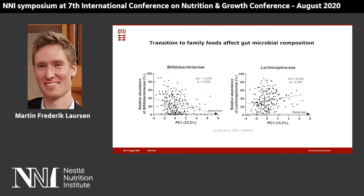We then looked at how this can affect the microbial population in the infant gut. We correlated the complementary feeding progression parameter with two major microbial families: Bifidobacteriaceae and Lachnospiraceae. We could see that the more progressed infants are in their complementary feeding, the less Bifidobacteriaceae they have in their gut. This is explained by the fact that with progression in complementary feeding, there is less breast milk in the diet, and since Bifidobacteriaceae live off the HMOs in breast milk, they decrease with complementary feeding. Vice versa, Lachnospiraceae — bacteria that are good at using dietary fibers and producing short-chain fatty acids — increase as infants progress towards eating family foods.